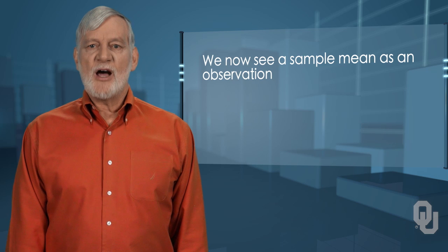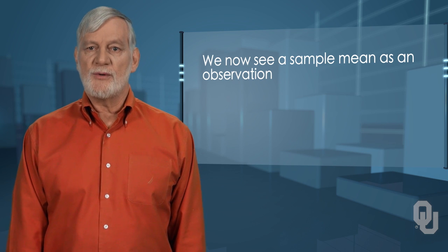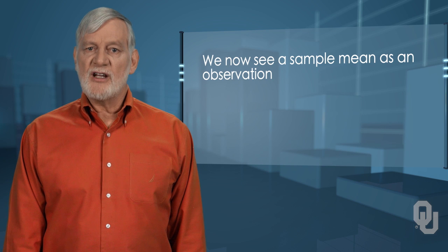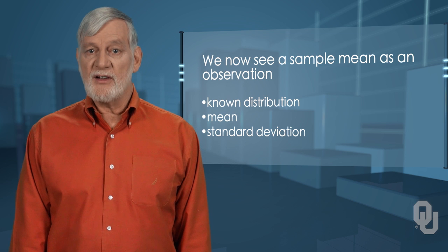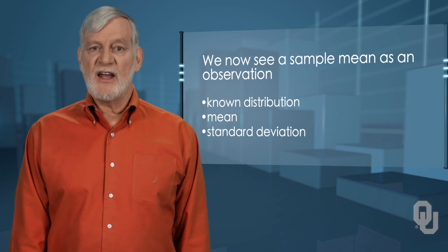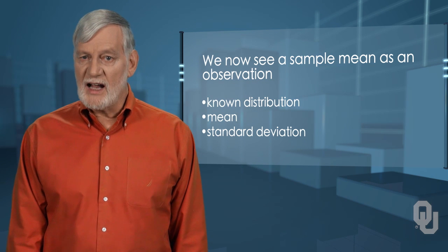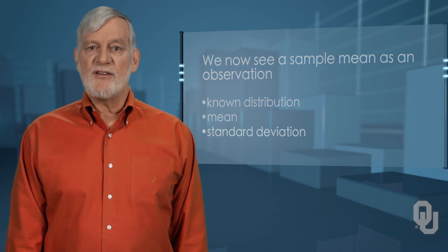We now see a sample mean as an observation, very much like the observations from which it arose. As just an observation, with a known distribution, mean, and standard deviation, we can calculate probabilities using the standard normal table and the standardizing formula, modified slightly, that we developed before. This now gives us the foundation for inferential statistics.